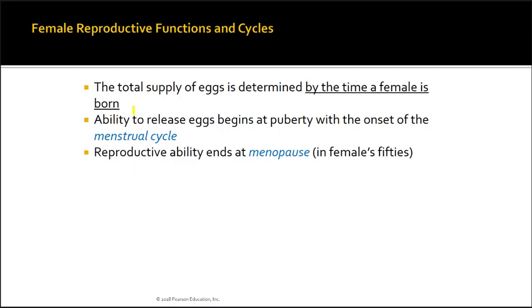Unlike males, who produce sperm starting at puberty, the total supply of eggs in a female is determined by the time she is born. A newborn female already has all the eggs she'll ever have, but they are immature and cannot be fertilized. The ability to release eggs begins at puberty with the onset of the menstrual cycle — when a female has her first cycle, approximately two weeks later she will ovulate her first egg. Reproductive ability ends at menopause, around age 50, when the menstrual cycle stops permanently.